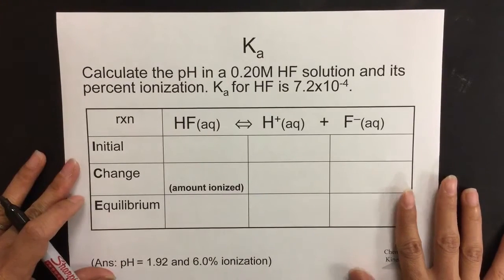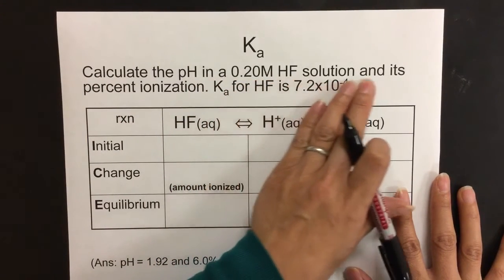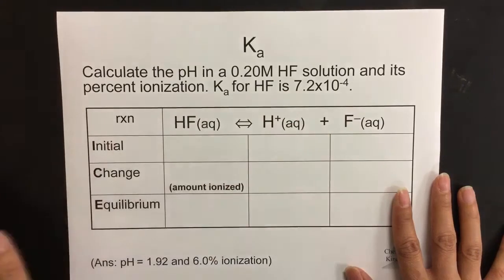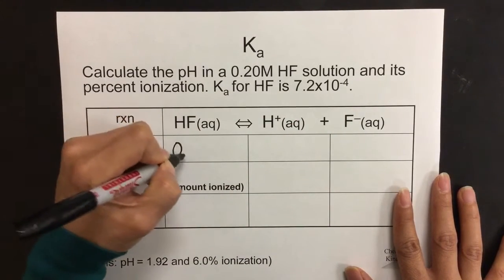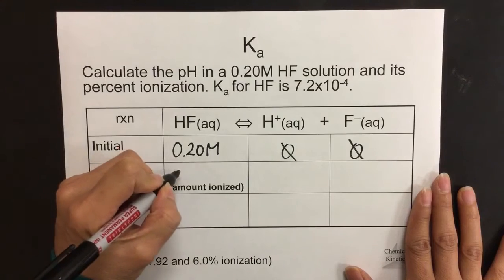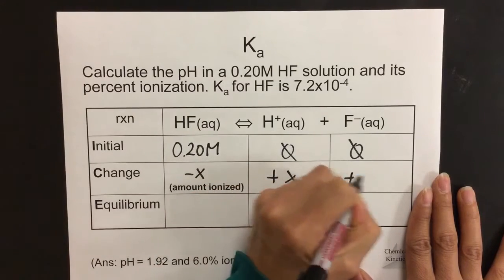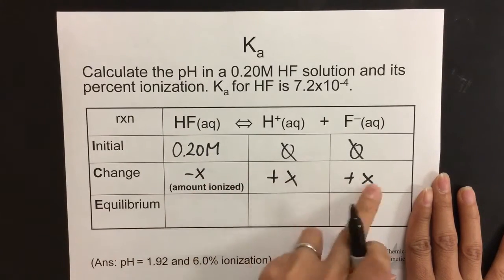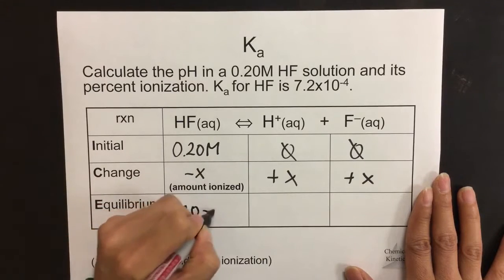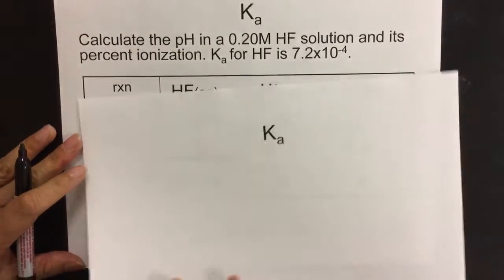Let's see an example problem play out in terms of this interconversion between pH and H+ concentration. In this first problem, we've seen this problem before. Calculate the pH in a 0.2 molar HF solution and its percent ionization. The Ka for this, the equilibrium constant for HF, is 7.2×10⁻⁴. Here's my original concentration is 0.2. I don't have any ions initially. A change occurs. That change is something that I'm not told what it is, so I call it x. And then I make stoichiometrically the same amount of the two ions that make up this acid.